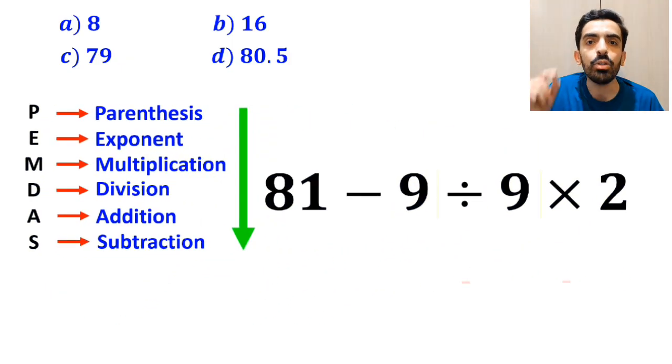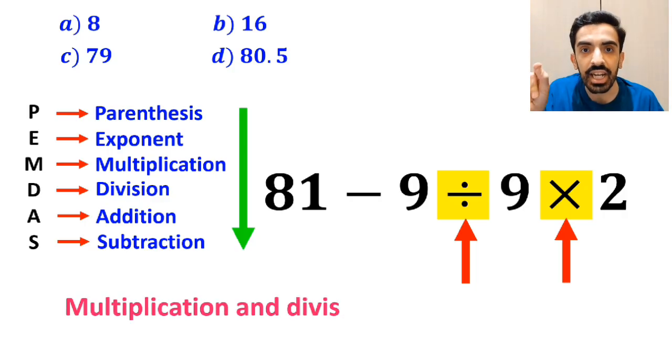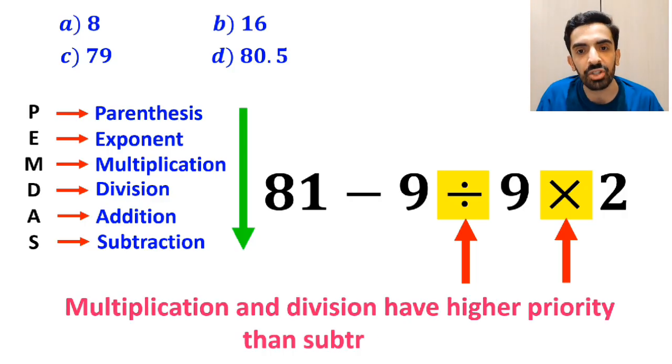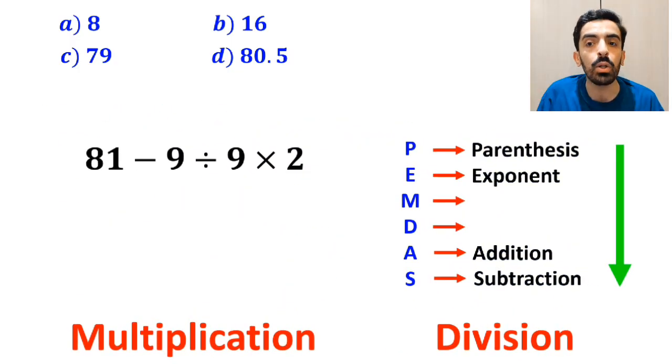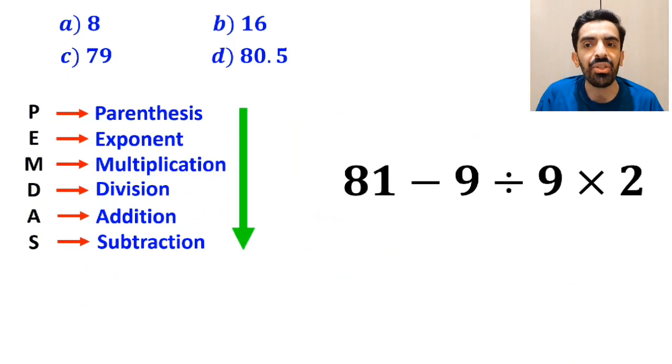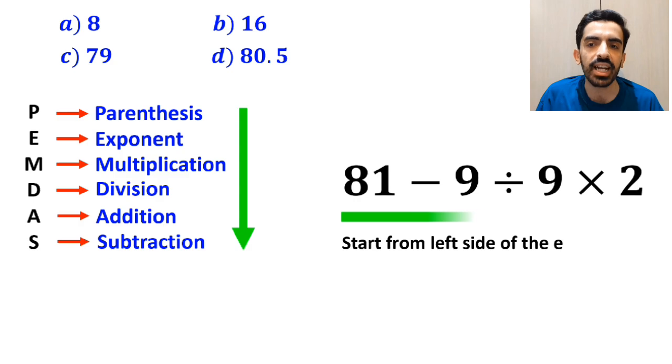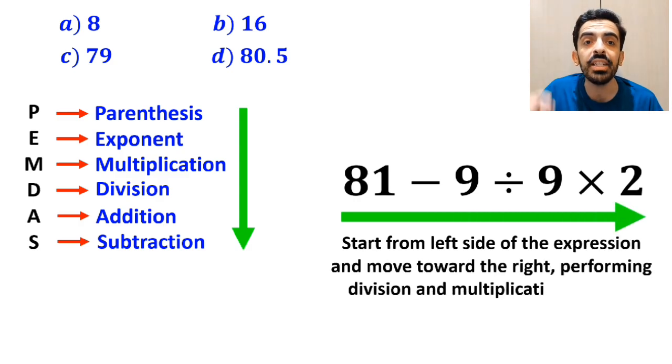In the next step, we need to handle the division and multiplication, since multiplication and division have higher priority than subtraction. However, it's very important to note that in the PEMDAS rule, multiplication and division have exactly the same level of priority. In this situation, the best thing to do is to start from the left side of the expression and move toward the right, performing division and multiplication in order.